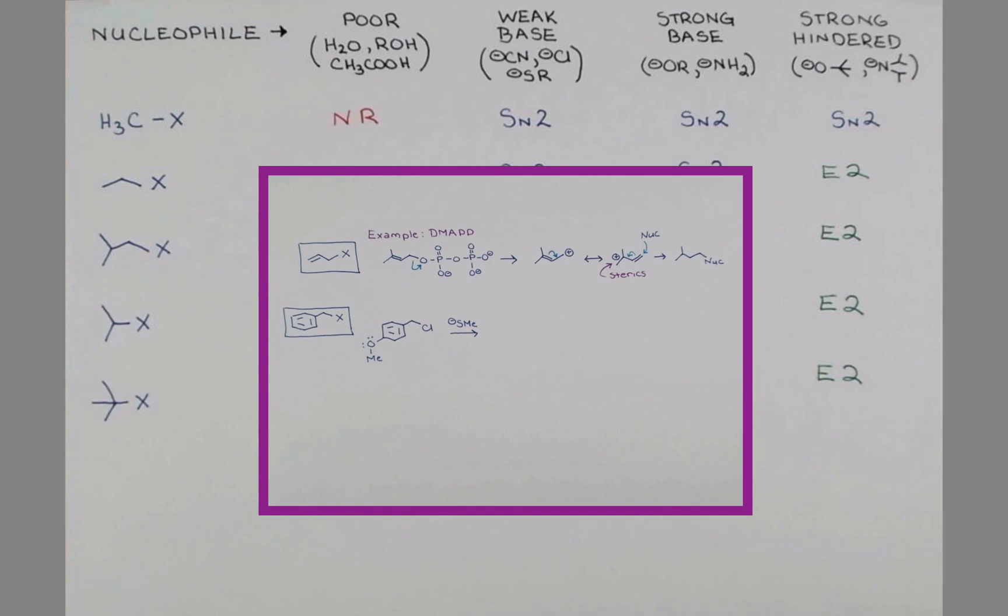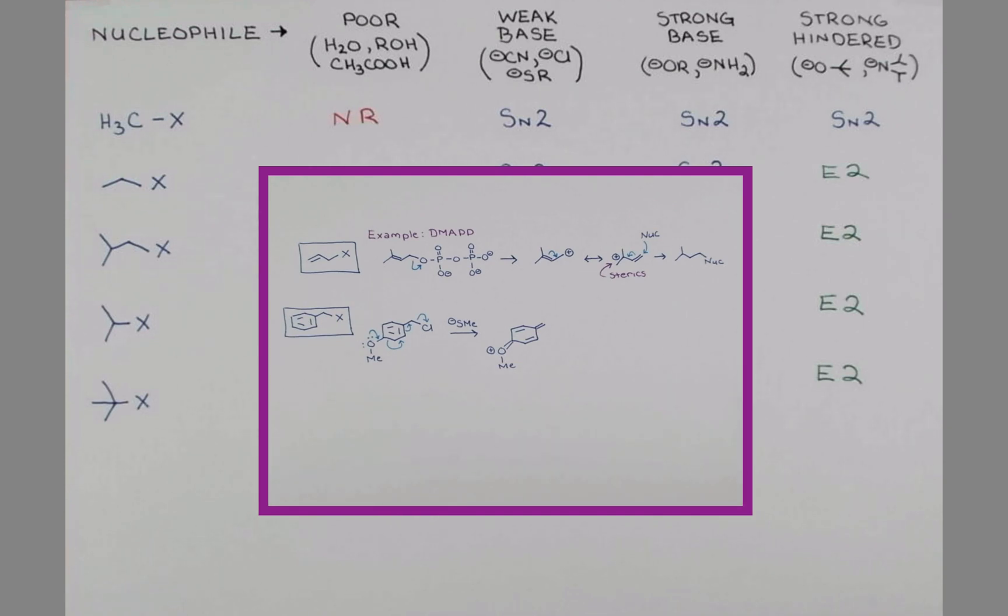In the next video in this series, I'm going to continue this chart to include allylic and benzylic substrates. These are much more complicated due to resonance effects and electronic effects through the rings, so if you'd like to go a little bit deeper, please come back and see me again. Subscribe, hit that notification bell, and we'll start to talk about those substrates next time. See you soon. Bye.